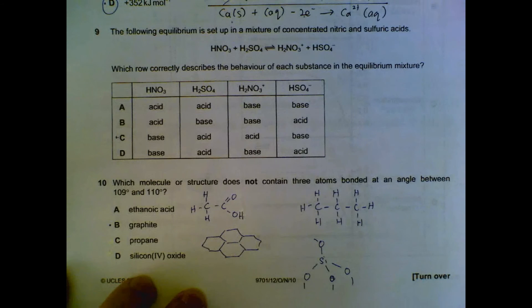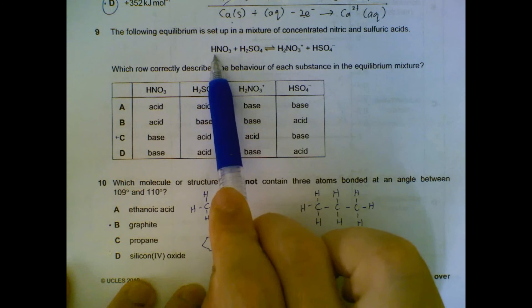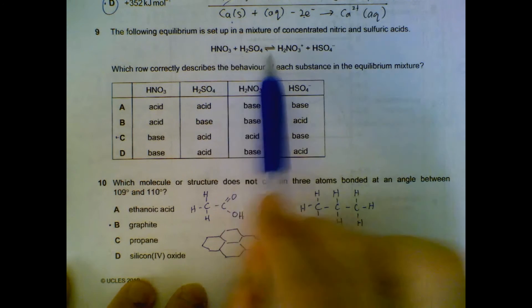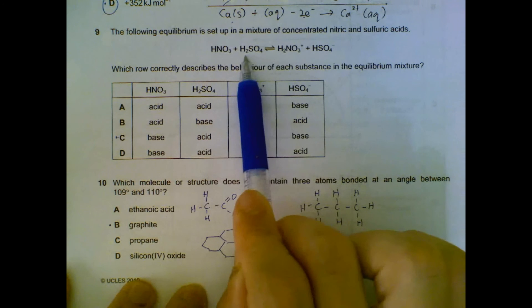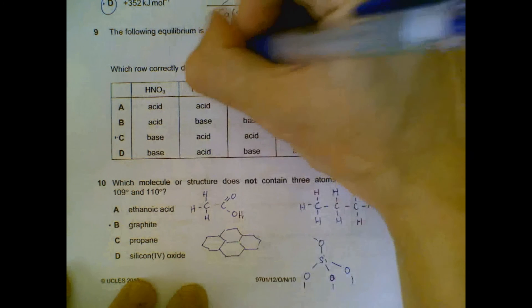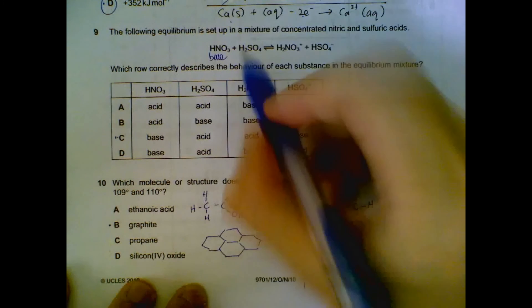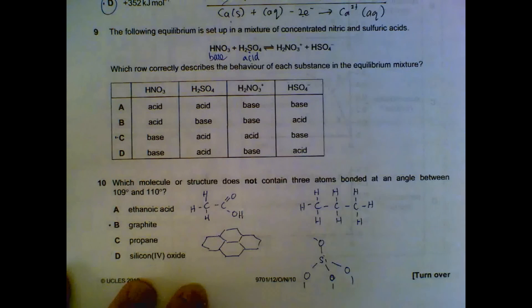Number nine: how can we describe the behavior of each substance? We can see that HNO3 actually gains a hydrogen to form a new product. H2SO4 loses a hydrogen. So gaining hydrogen or gaining a proton is behaving like a base. H2SO4 losing hydrogen, a proton, is behaving like an acid.